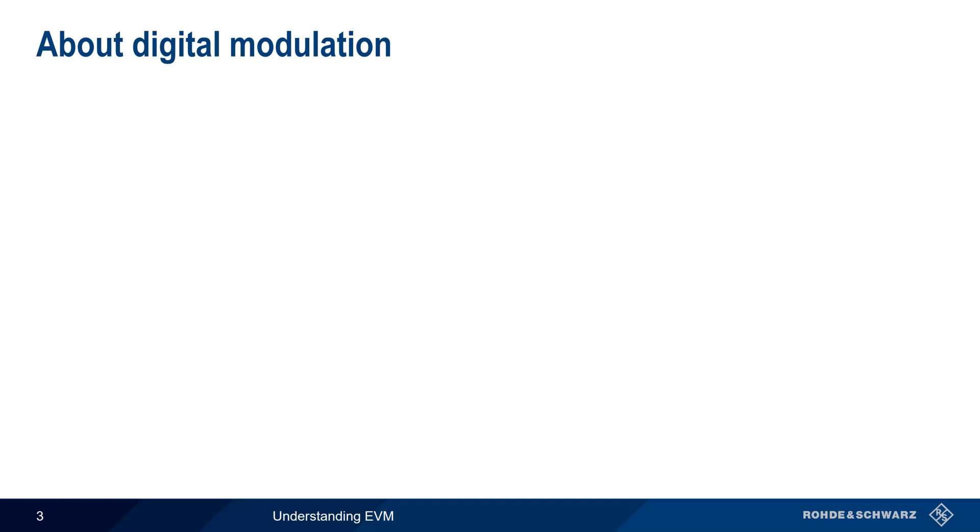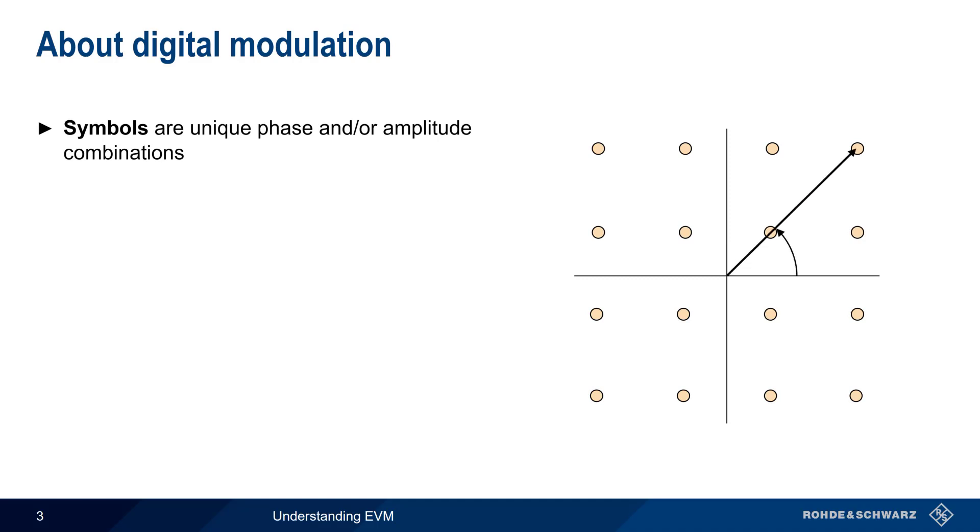As you should already know, many digital modulation schemes are based on symbols, which are unique combinations of amplitude and/or phase values. Each symbol represents certain bit patterns. For example, in the 16 QUAM constellation, each of the 16 symbols represents a unique pattern of 4 bits, and by altering the amplitude and/or phase of our carrier, we can alter which set of bits we're transmitting.